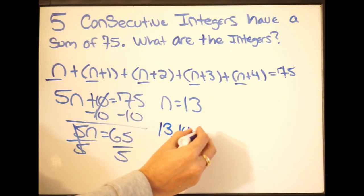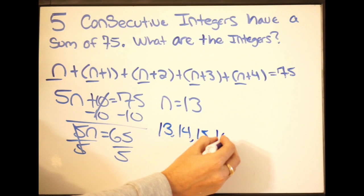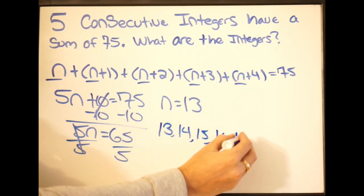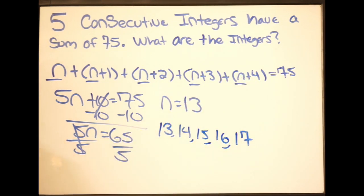Right here, we're going to get 15. Here, we get 16. And here, we're going to get 17. So these are going to be the five consecutive integers that when I add them, their sum is going to be 75. Okay, and that is it.